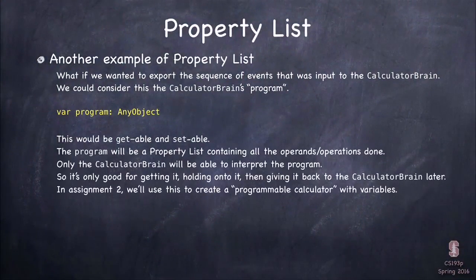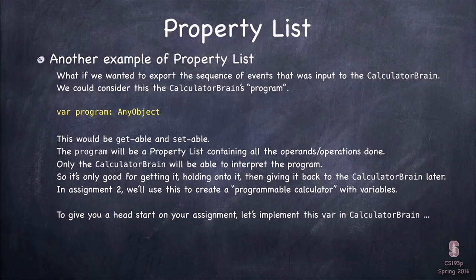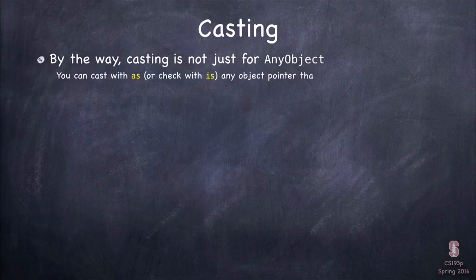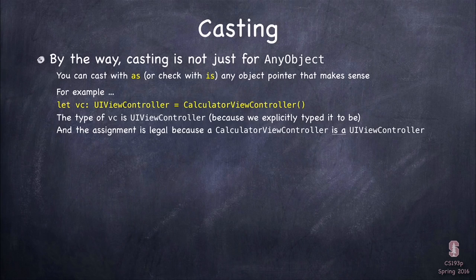This will be valuable in assignment two when you add variables to your calculator — you'll be able to say three times x times five equals, where x is a variable. You can get the program as a property list, set x later, and run it again and again. We make it a property list because it's nice to store it in user defaults. We're going to create a var called `program` in our calculator brain — gettable and settable. Getting it returns the current program; setting it runs the program.